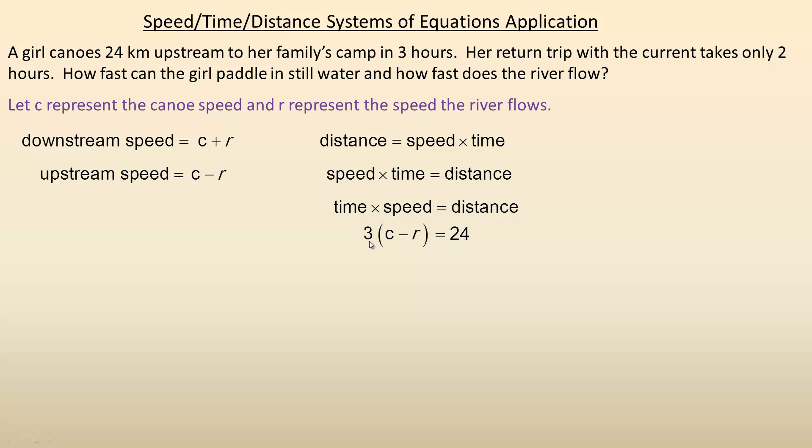So the time is 3 hours, the expression for the speed is the canoe speed minus the river, and time times speed gives us the distance, the 24 kilometers that she traveled.